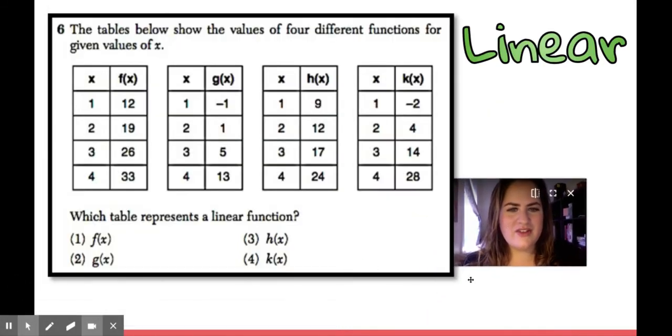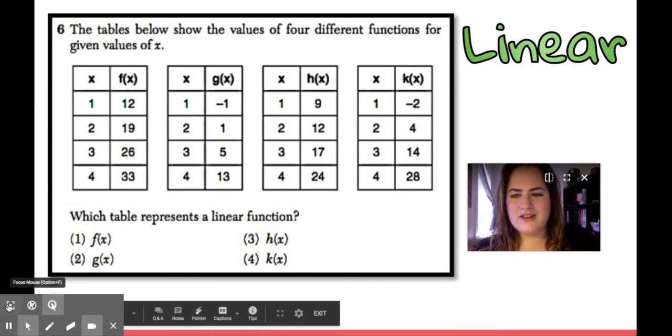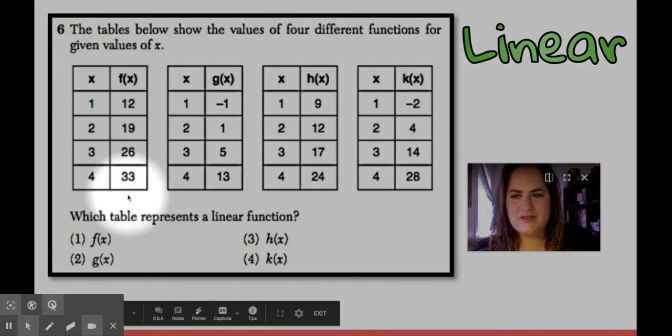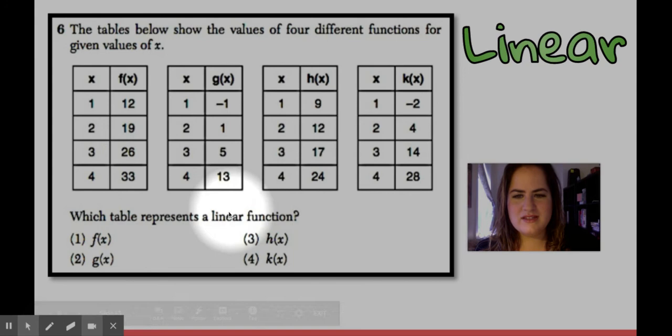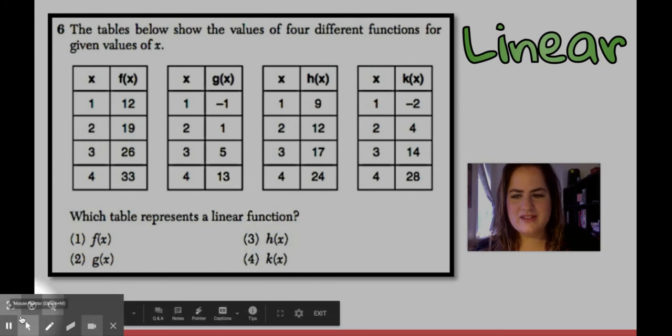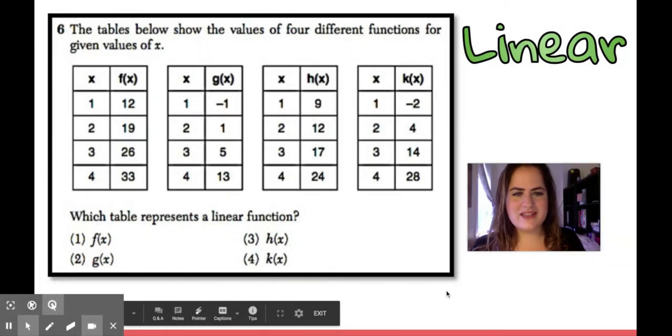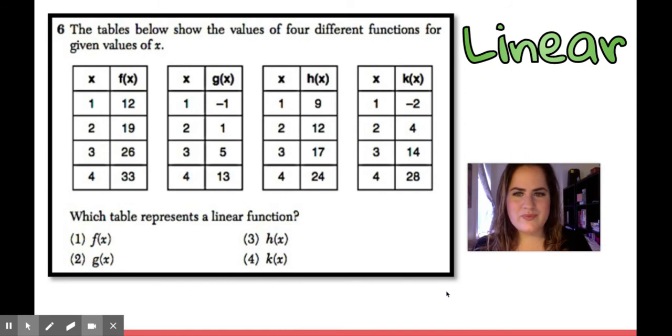Okay, let's do another one. I'm looking to see which one of these tables, just looking at the y values, is a linear function. So take a second. Pick a choice. That's the linear function. Okay, if you said choice one, you're correct. That's the only one that has a constant rate of change, which is plus seven, plus seven, plus seven.